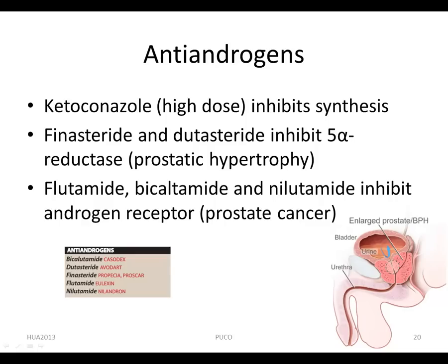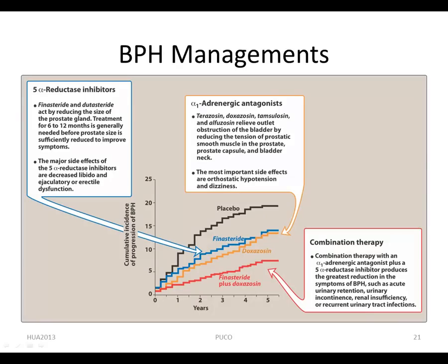Here's a slide showing benign prostatic hypertrophy management. You can use 5-alpha reductase inhibitors like finasteride and alpha-1 adrenergic antagonists like doxazosin and tamsulosin. The most effective approach is the combination of 5-alpha reductase inhibitors and alpha-1 adrenergic antagonists.